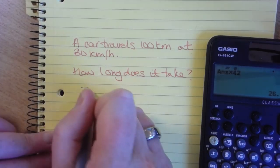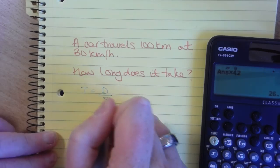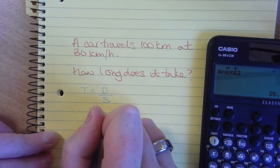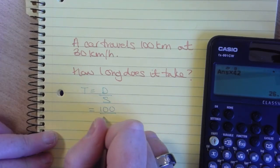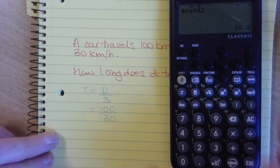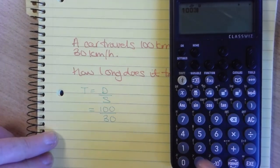This time we want time equals distance over speed. The distance is 100 kilometers. The speed is 30 kilometers per hour. So on our calculator, we're going to do 100 divided by 30.